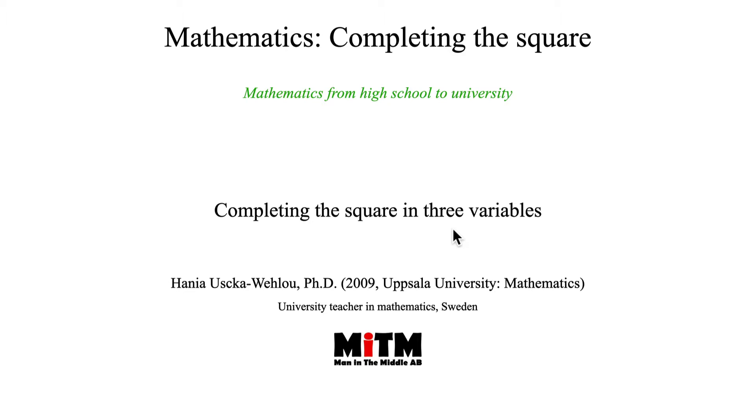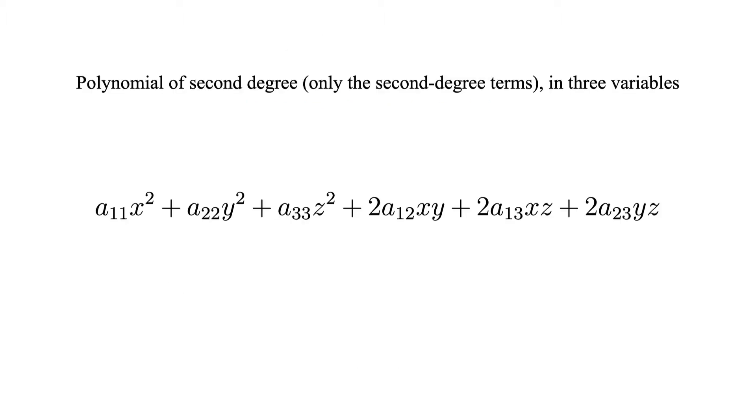Completing the square in three variables. The expression we will work with looks like this. You see that we have three variables x, y, and z, and we have mixed terms xy, xz, and yz. By now you know that these are also seen as second degree terms, exactly as z squared, y squared, and x squared.